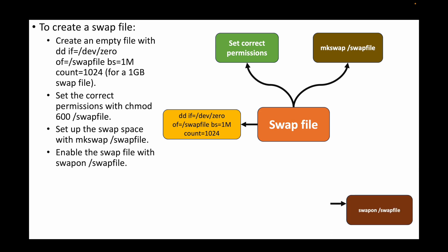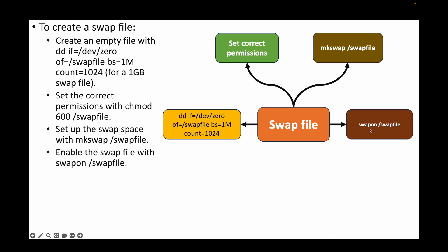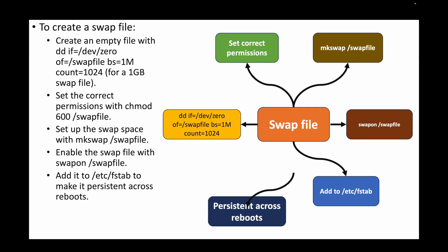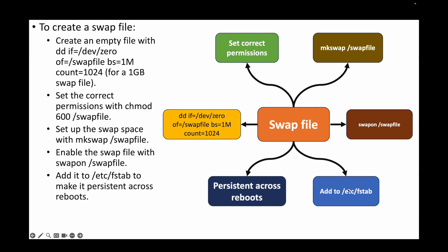After that, enable the swap file with the swapon command to activate it. Finally, add the swap file entry to /etc/fstab. This is important because without it, if you reboot the system the swap file will be gone. Adding it to /etc/fstab makes it persistent across reboots so the swap file is still available after restarting.